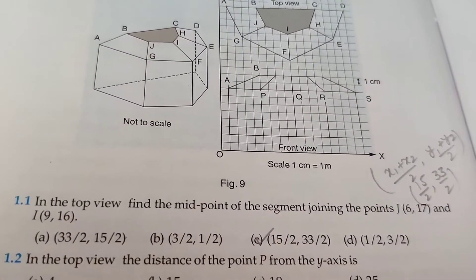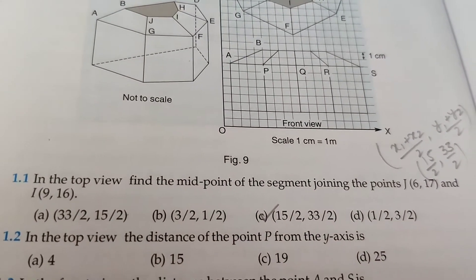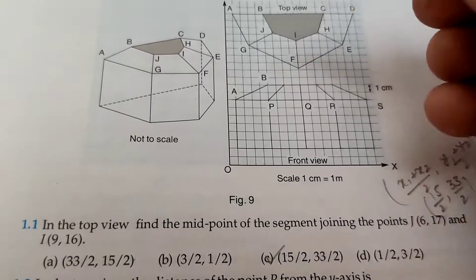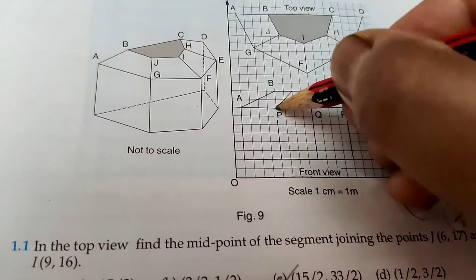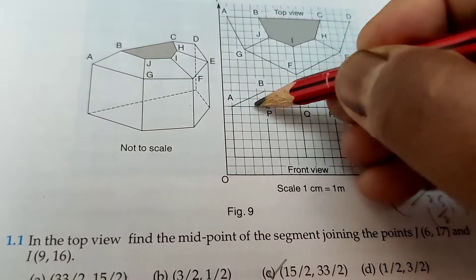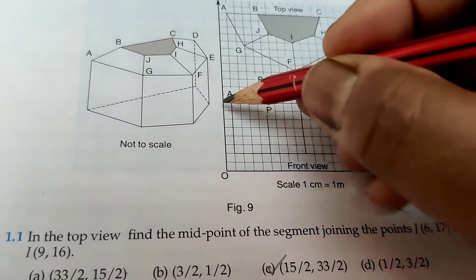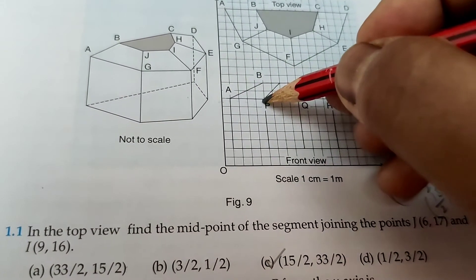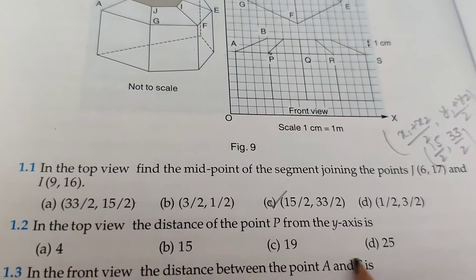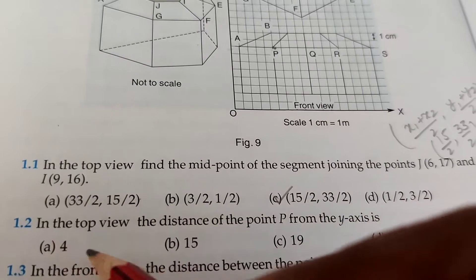Next, in the top view, the distance of point P from the y-axis. This is point P, the distance from y-axis is 1, 2, 3, 4, 5. The distance from y-axis to point P is 5 units. There is no option, so we can write here: 5 units from the y-axis. All options are wrong.